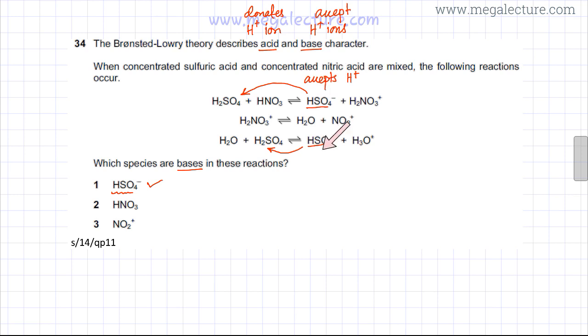Moving on to the next option, which is nitric acid HNO3. The first option is correct, it's a base. Let's figure out where HNO3 is - it's in the first reaction. If you look at this reaction in the forward direction, HNO3 gets converted into H2NO3+. Clearly it's gaining an H+ ion, so it accepts an H+ ion and is acting as a base in the first reaction.